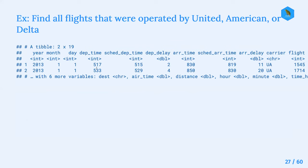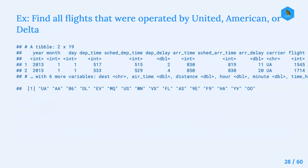Looking at the first couple rows of the flights data frame, we can see the carrier column is included before the flight number. In this subset we can only see UA, which is United. Considering all the different carriers in the dataset, UA is one of them, along with AA, B6, DL, EV, and so on.